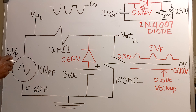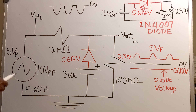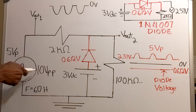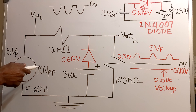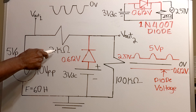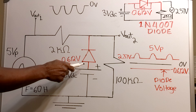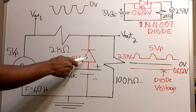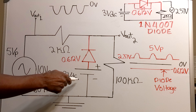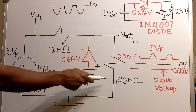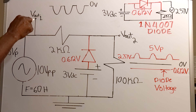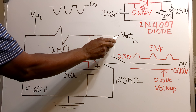In this video I'll be explaining this negative clipper circuit. I have a 5 volt peak at the input, which means it's a 10 volt peak-to-peak signal. That signal is in series with a 2k ohm resistor, which is in series with a parallel combination of a diode, a 3 volt DC source, and a 100k ohm resistor. I've got VO1 and VO2.